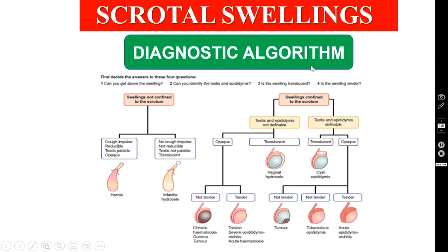Coming to this diagnostic algorithm: first, when the upper limit is not palpable — meaning you cannot get above the swelling — this is not a scrotal swelling but an inguino-scrotal swelling, which I have already discussed. Our patient is a scrotal swelling patient. Even with a scrotal swelling, you have to look for whether the testis and epididymis are palpable or not. In testicular carcinoma, usually the testis and epididymis are palpable. Whether it is opaque or translucent — definitely it is opaque because there is no surrounding fluid. And whether it is tender or not tender — usually it is not tender.